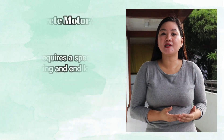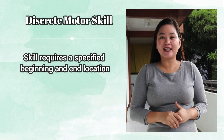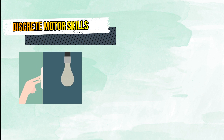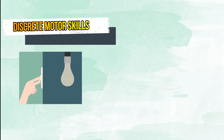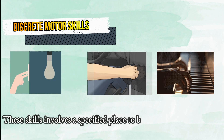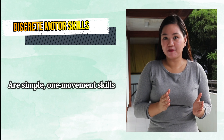Number two classification is the specificity of where actions begin and end. Researchers classify motor skills on the basis of how specific the beginning and end locations are for an action. If a skill requires defined beginning and end locations, we categorize it as a discrete motor skill. Discrete motor skills include, for example, the flipping of a light switch, depressing the clutch of an automobile, and hitting a piano key. Each of these skills involves a specified place to begin and end the action. Discrete skills are typically simple, one-movement skills.